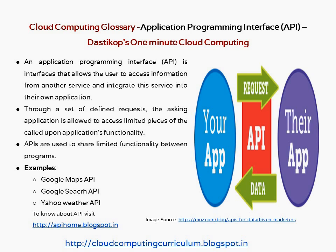allows users to access information from other services and integrate them into their own application. On the right side you see a picture — on the left side you are developing an application and you want a functionality or content from another resource or service. For that you can send a request using an API, and that would respond with the content that you want through a set of defined requests.